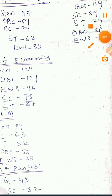Next, MA Sociology: General mark is 97, OBC is 84, SC is 94, ST is 62, EWS is 80.